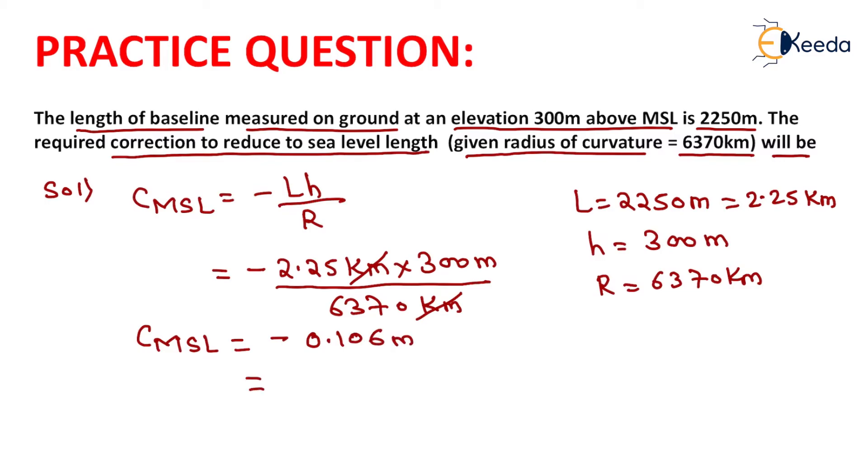So we will convert this value in terms of mm, it will be equals to minus 106 mm. That will be the correction due to mean sea level, which will be equals to 106 mm.